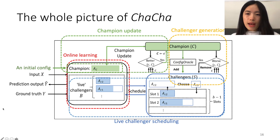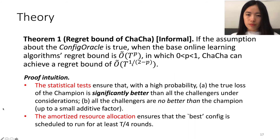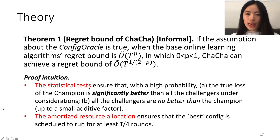The proposed method is theoretically grounded. We have a theorem proving its sublinear regret bound. The final order of the regret bound depends on the regret order of the base learning algorithm. The proof of this theorem is based on the two major components of this framework: the statistical test and the amortized resource allocation strategy.